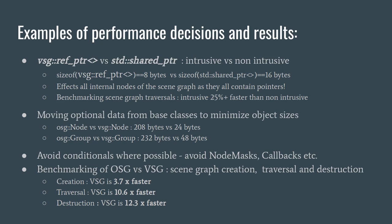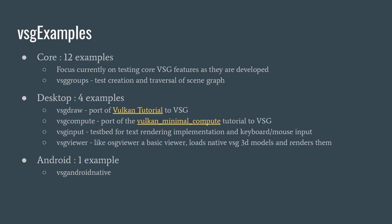On a benchmark creating a quad tree 11 levels deep, then traversing and destructing it: VSG creation is 3.7 times faster, VSG traversal is 10.6 times faster, and VSG destruction is 12.3 times faster than the OSG — for the same complexity of scene graph. This significant performance improvement is all down to design choices: making objects smaller for better cache behavior and lower bandwidth loads, and avoiding conditionals where possible.